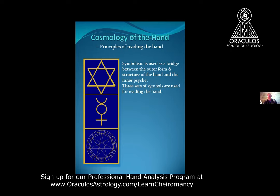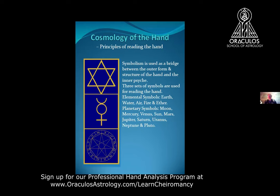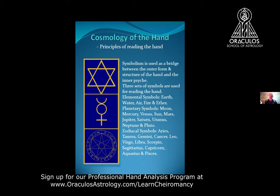We've got three sets of symbols — this concords with what Michael discussed in his divinatory lecture. We have elemental symbols, which are part of the physical world; planetary symbols; and zodiacal symbols. When we study hand reading we have to look at all these symbols in depth, but today I'm just going to skirt over them.